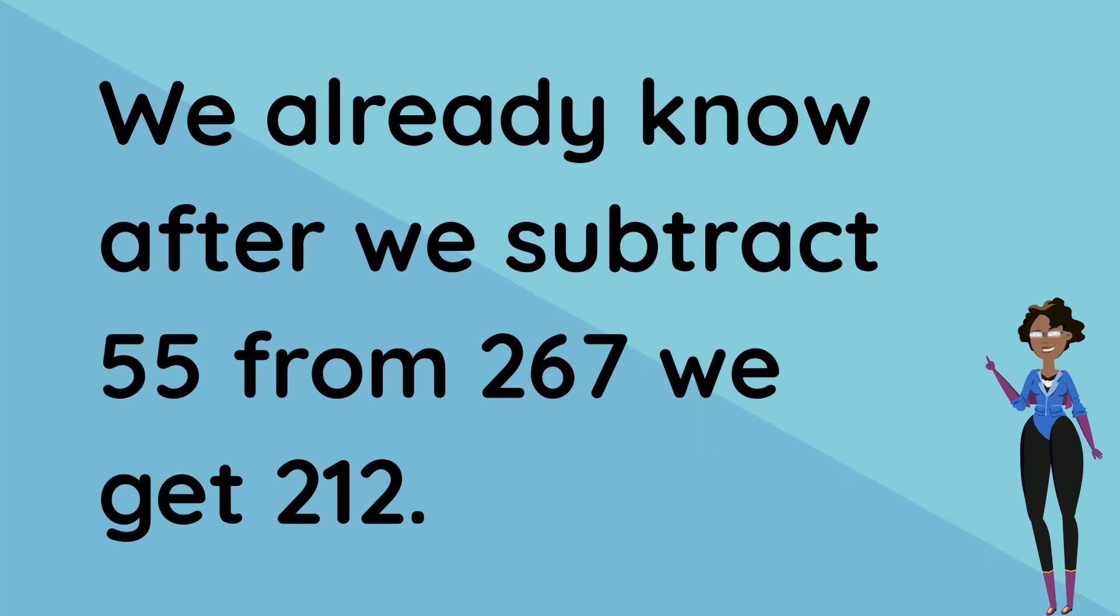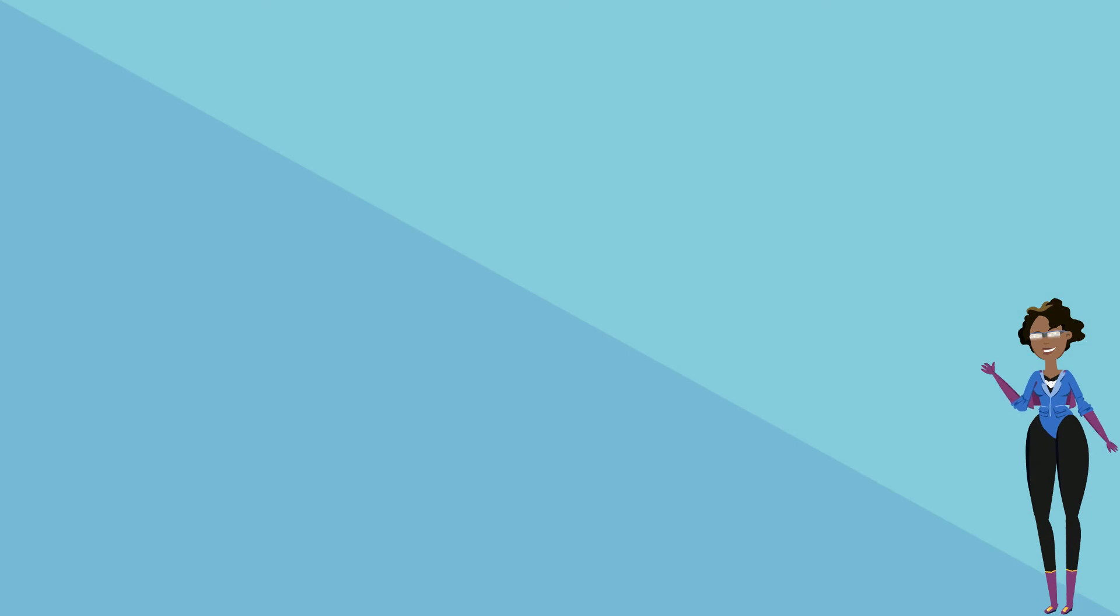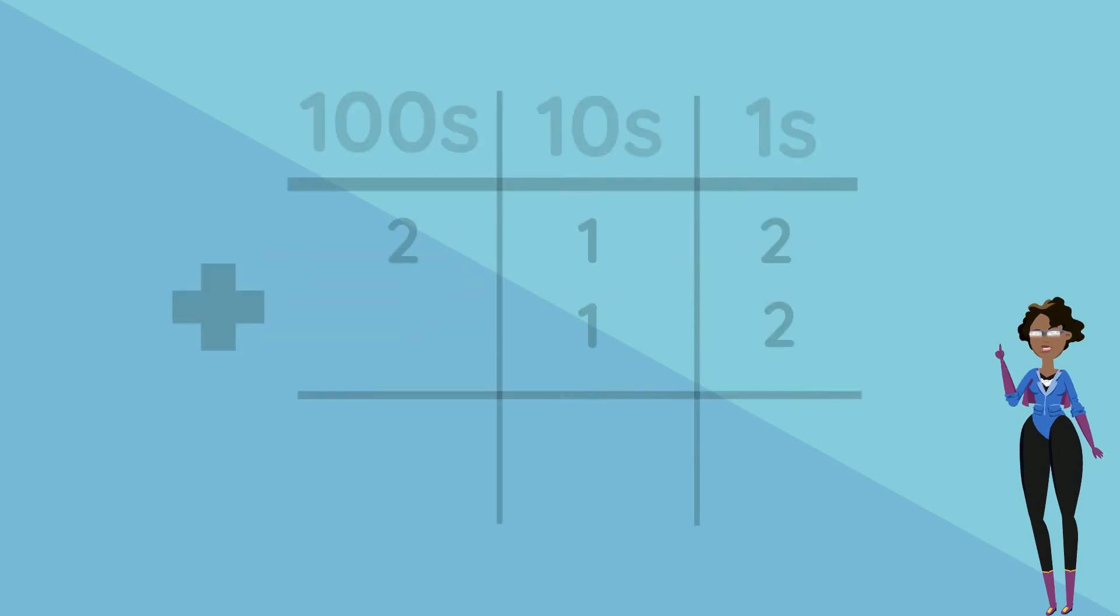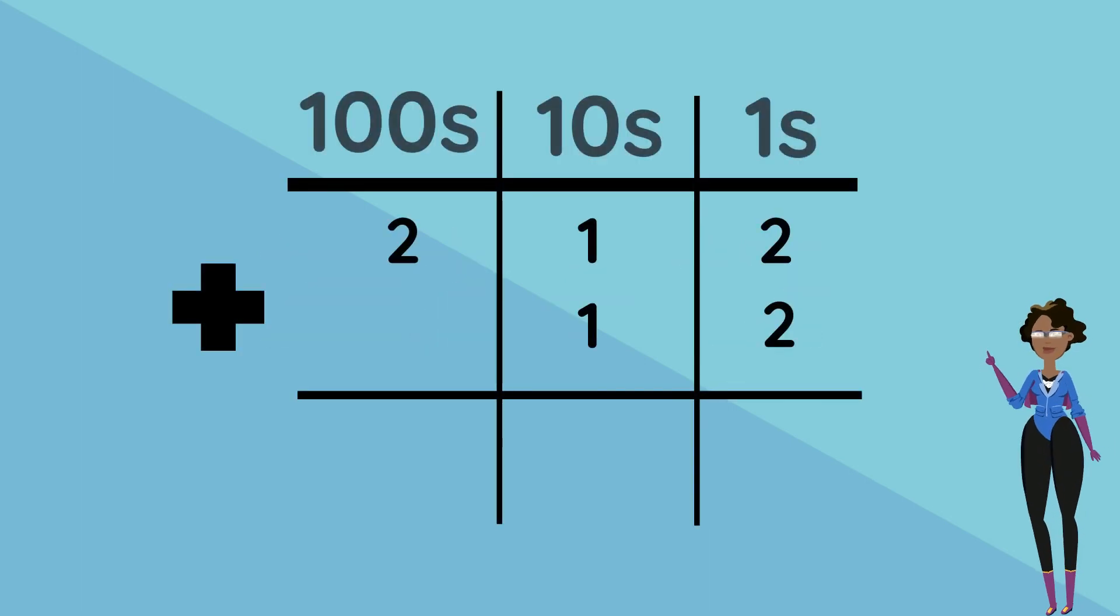We already know after we subtract 55 from 267 we get 212. So for our second step we have to add 212 plus 12. We place our numbers into the place value chart and now let's add 2 plus 2 equals 4 in the ones column, 1 plus 1 equals 2 in the tens column. There is nothing to add in the hundreds column so we bring down our 2 into our answer space which gives us 224.